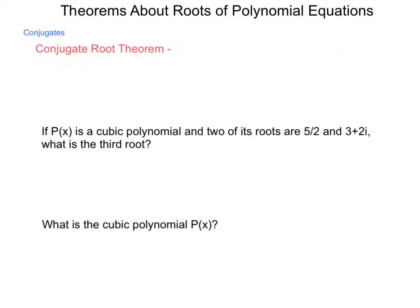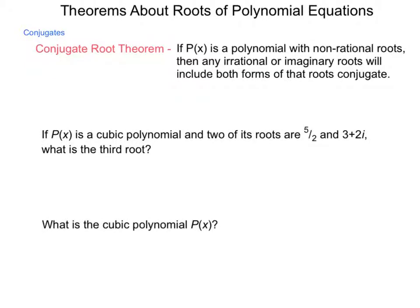So, the conjugate root theorem, and you'll remember we worked with conjugates in Unit 4, the conjugate root theorem states something along the line of, if P(x) is a polynomial with non-rational roots, then any irrational or imaginary roots will include both forms of that root's conjugate. And what this means is that if I come out with something in the form of a + √b as a root, then I automatically get a - √b. Or, if I get a + bi as an imaginary root, then I automatically will get a - bi as another one. So, it helps us to build more roots from a basic system.